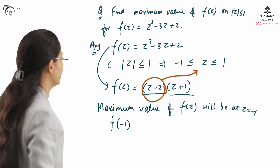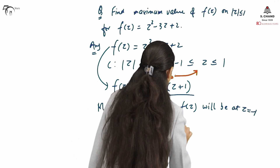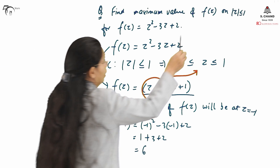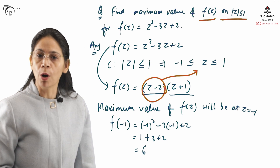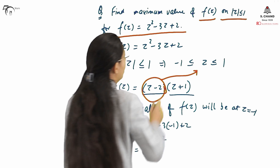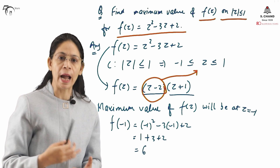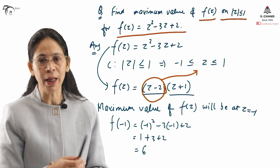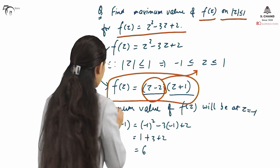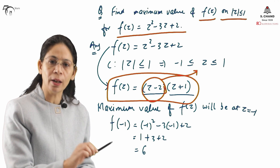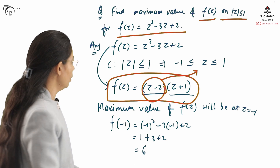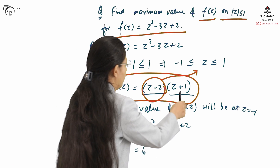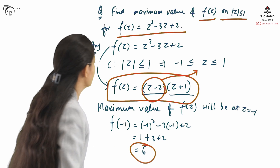We calculate the value of F(z) at z = −1: it is (−1)² − 3(−1) + 2 = 1 + 3 + 2 = 6. So the maximum value of F(z) on the curve C where C is mod of z ≤ 1 is 6. Since z = 2 is not lying inside or on the curve C it is discarded, and z = −1 is used to calculate the maximum value. The answer is 6.